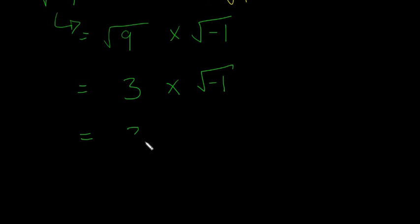So what we do is we change that to 3 multiplied by i. So i is equal to the square root of minus 1. And then 3 multiplied by i, we just write that as 3i.